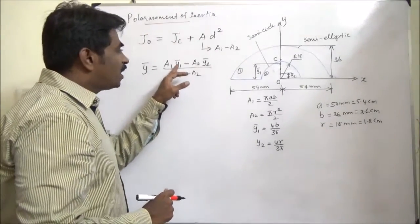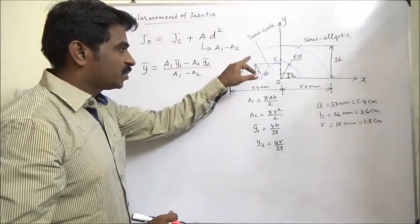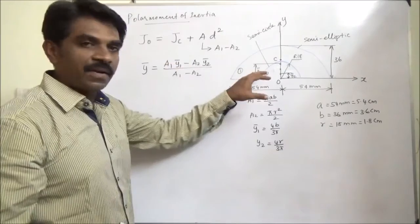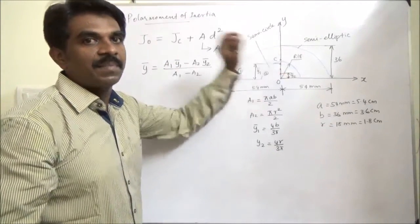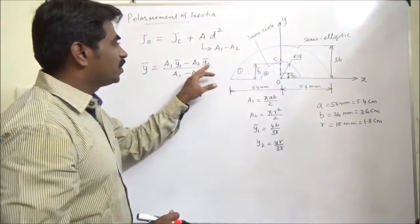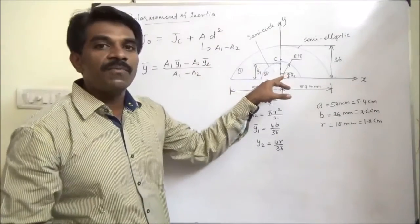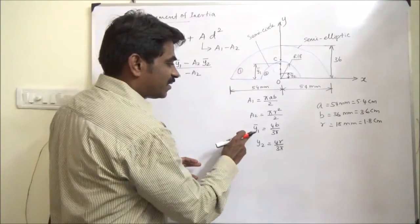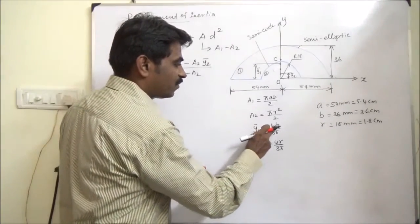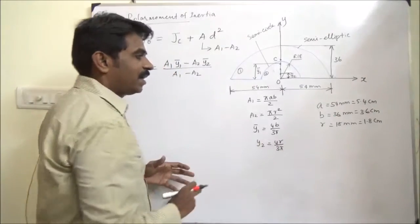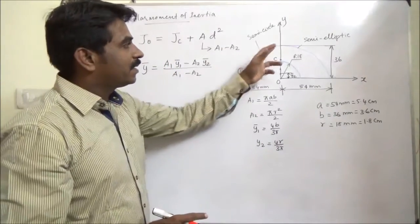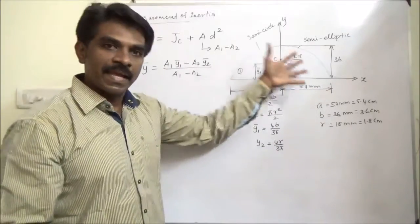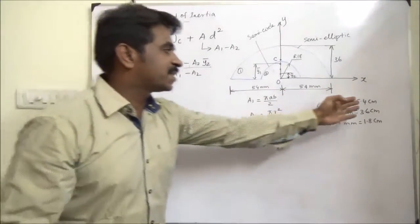Y1-bar refers to the centroid of the semi-elliptic section, and Y2-bar is the centroid of the semi-circular cross section. Y1-bar equals 4B by 3π, and Y2-bar equals 4R by 3π. The A, B, and R values are directly given, expressed in centimeters.